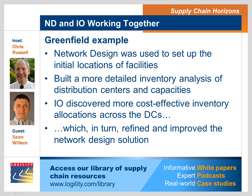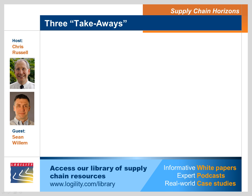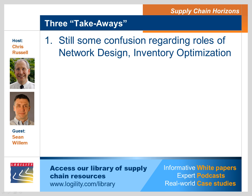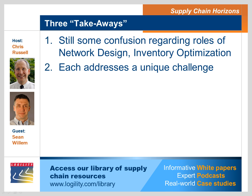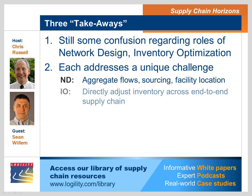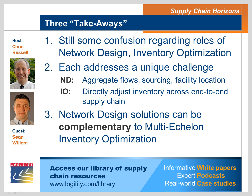This has been very elucidating. Our takeaways from this discussion: while multi-echelon inventory optimization and network design exist in a similar solution space, each addresses a unique supply chain challenge. If your challenge is aggregate flows, sourcing, or facility location, network design may be appropriate. If your challenge is to directly address inventory across all tiers of your supply chain to drive your business, multi-echelon inventory optimization is uniquely suited. There's no reason why aggregate network design solutions cannot be deployed in a complementary planning process with multi-echelon inventory optimization, using the strengths of each to drive further supply chain maturity and competitiveness.